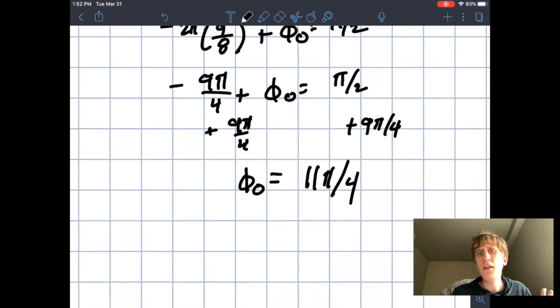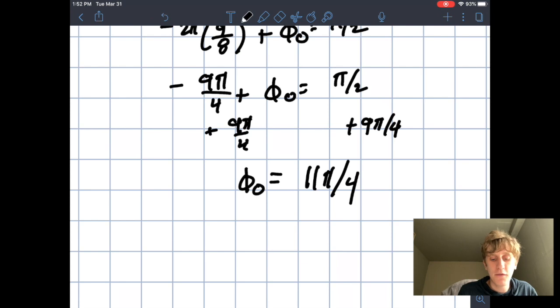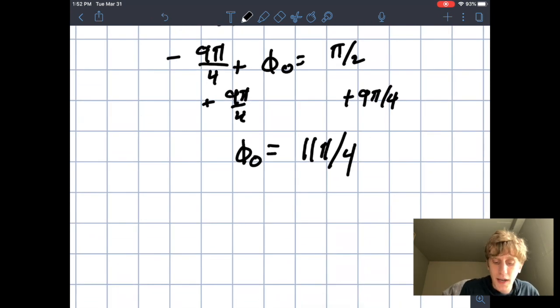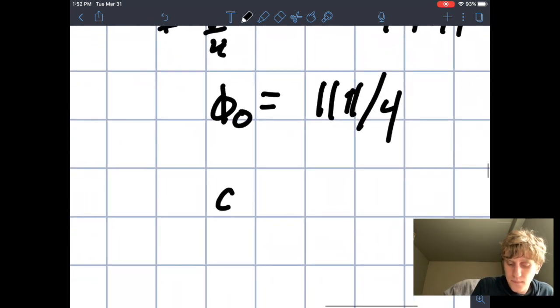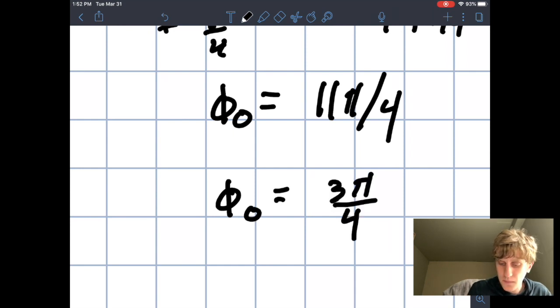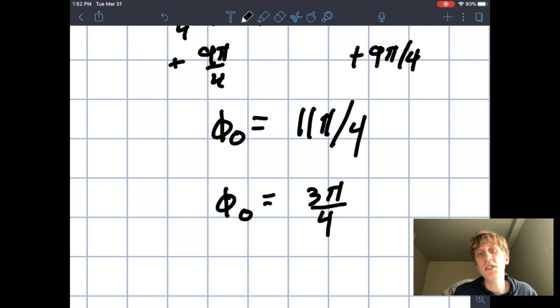It's generally standard to try to pick your phase constant to be between 0 and 2 pi. Now right now we have a phase constant that is greater than 2 pi. So let's subtract 2 pi from it to get a number that's between 0 and 2 pi. These phase constants are exactly equivalent in the sine function because they only differ by a factor of 2 pi.